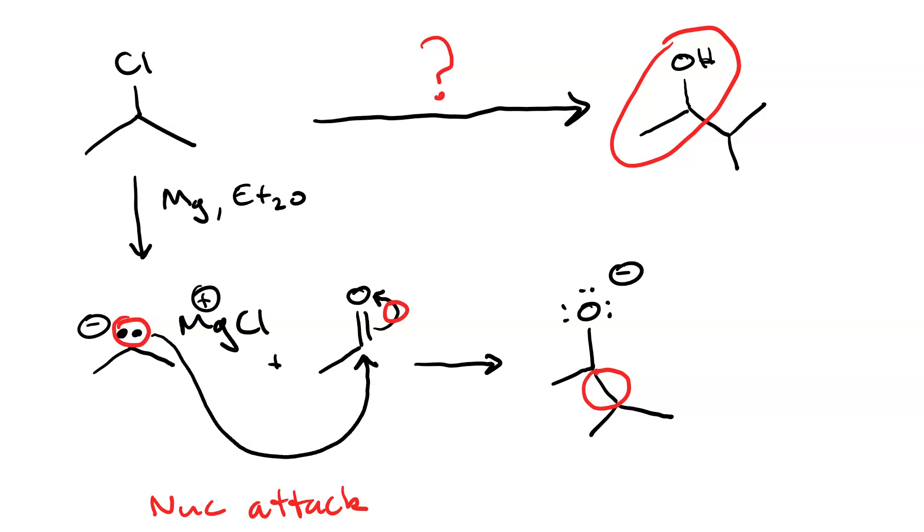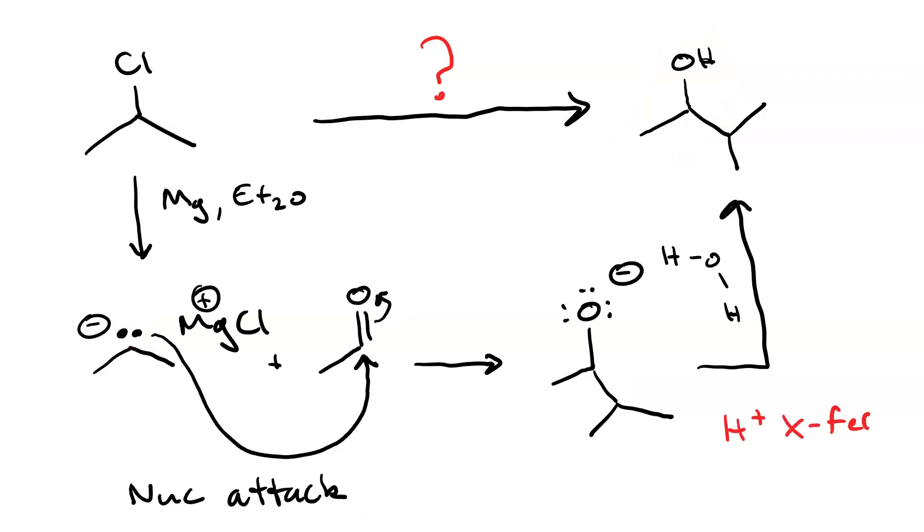Now we're not far away from our product. All we need is a weak acid to protonate it. Let's use water. So then our alkoxide acts as a base, takes a proton from the water. This is a proton transfer step, and we form our alcohol.